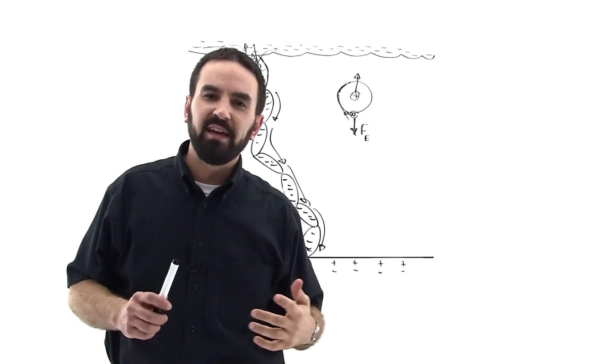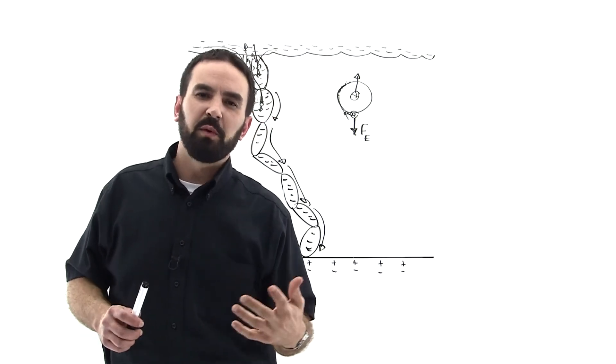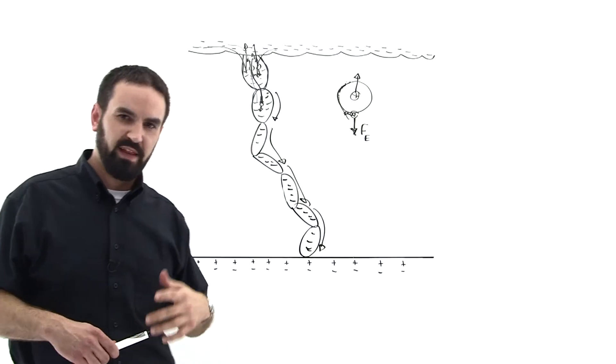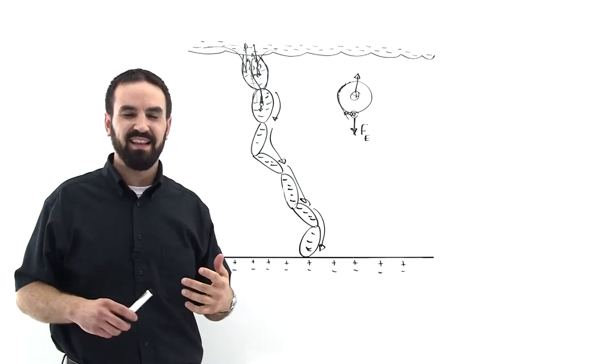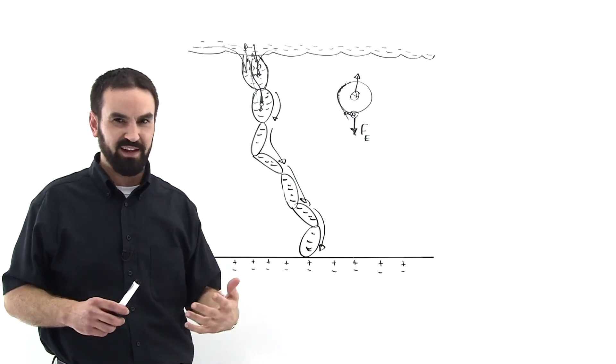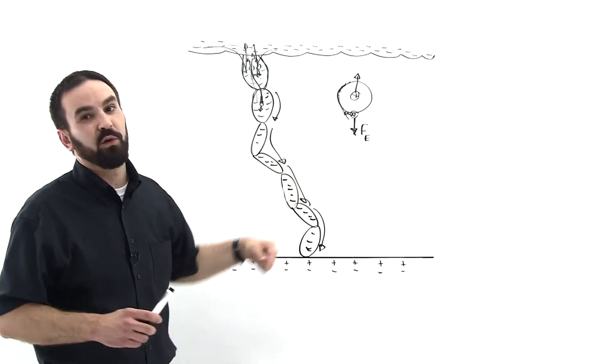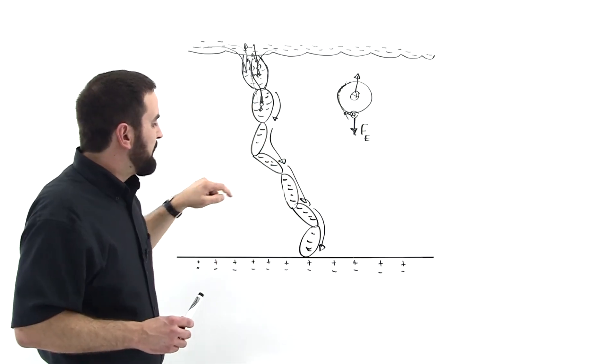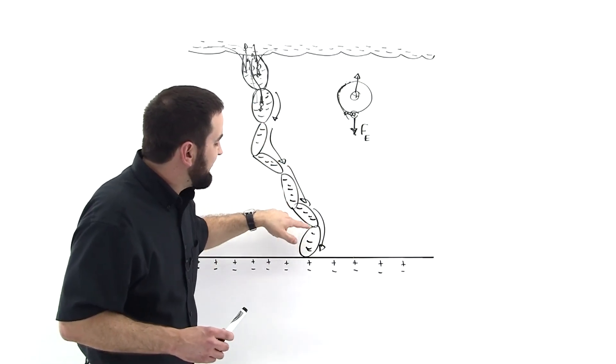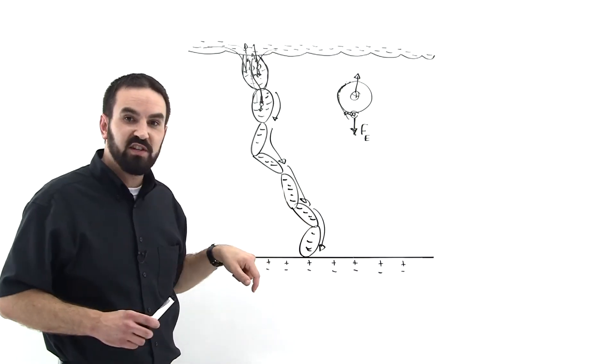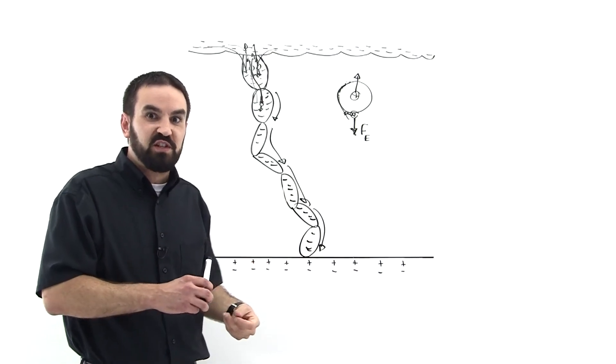So have you ever heard that lightning goes backwards? This is what people mean when they say that lightning goes backwards. It's not that lightning goes backwards if you're considering the electrons. The electrons are going down. But because these electrons that touched the earth first, those are the first ones to dump.